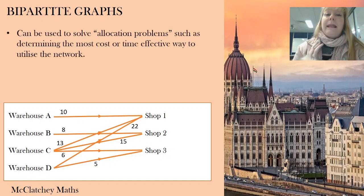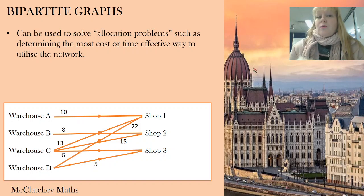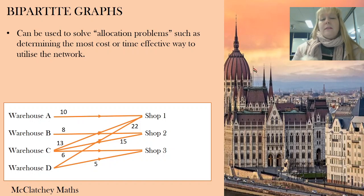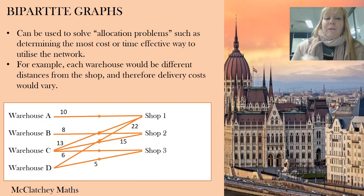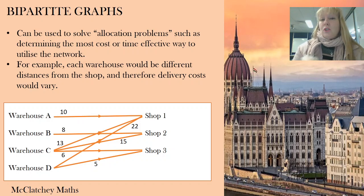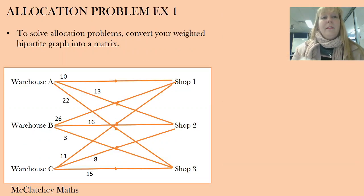Weightings could also represent the time taken to make deliveries. We use bipartite graphs to solve what's called allocation problems, where we're trying to work out the best way to use our network — for example, making deliveries in the most cost or time effective way. We may not want warehouse A to deliver to every shop. In this example, warehouse A is perhaps 10 kilometres to shop one; warehouse B is only delivering to shop two; and warehouse C goes to all three but at greater distances.